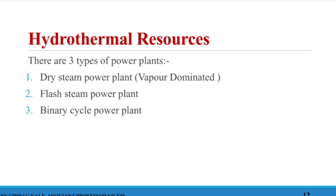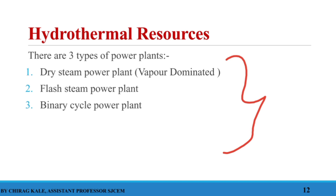Now, hydrothermal sources — this is the most important topic. From examination point of view, if any question is asked from this chapter, it will definitely be from one of these three topics. The hydrothermal resource is a cavity containing hot liquid or gas. When that hot liquid or gas tries to escape as steam, we use it to generate power or for other applications. Power generation from hydrothermal resources takes place by three particular methods: dry steam power plant, flash steam power plant, and binary cycle power plant.